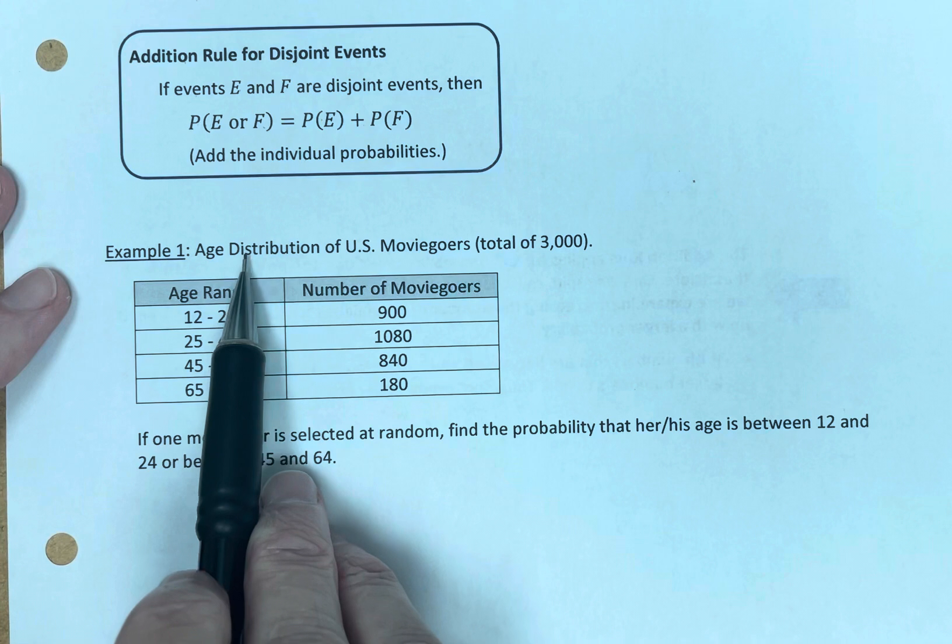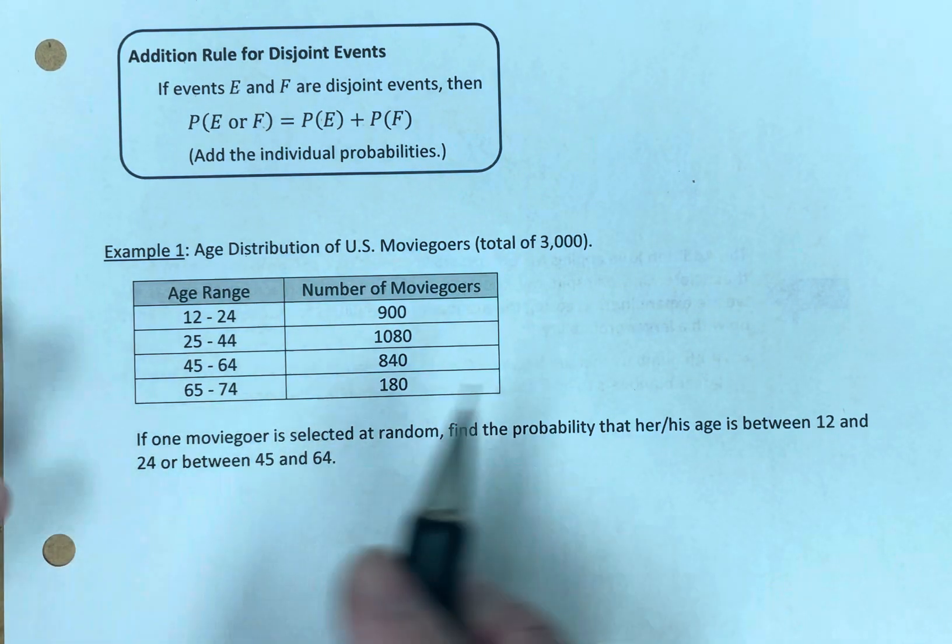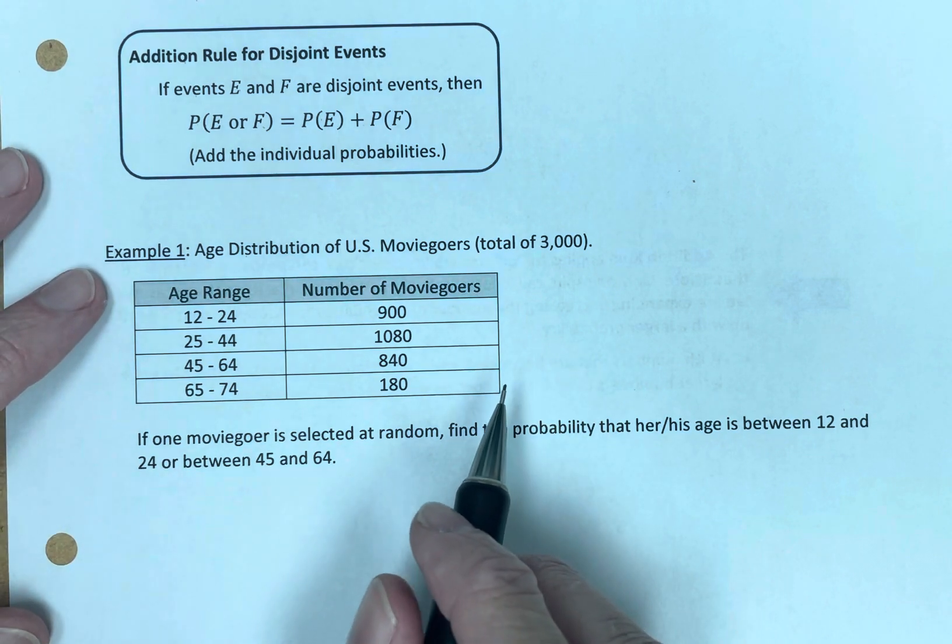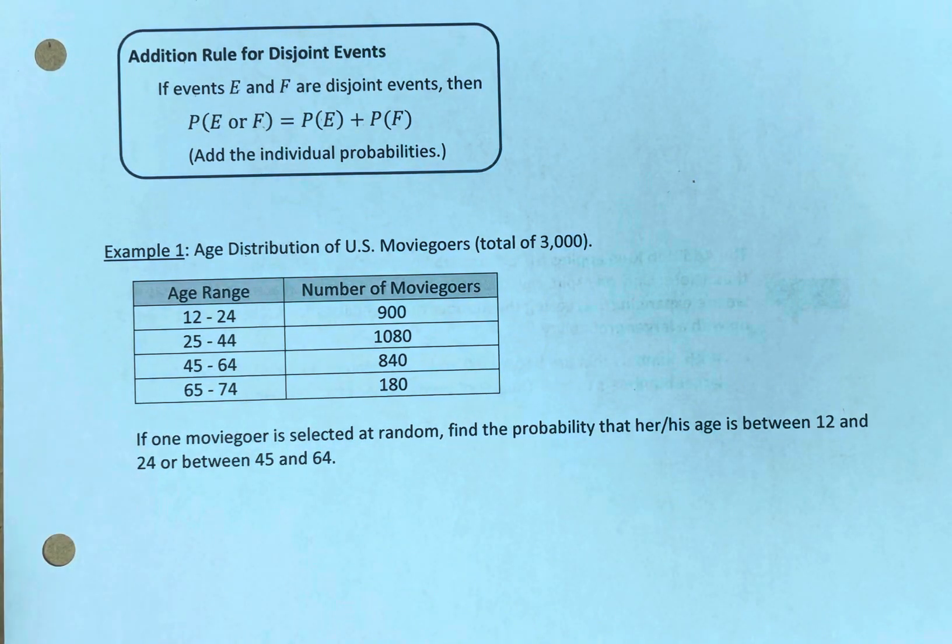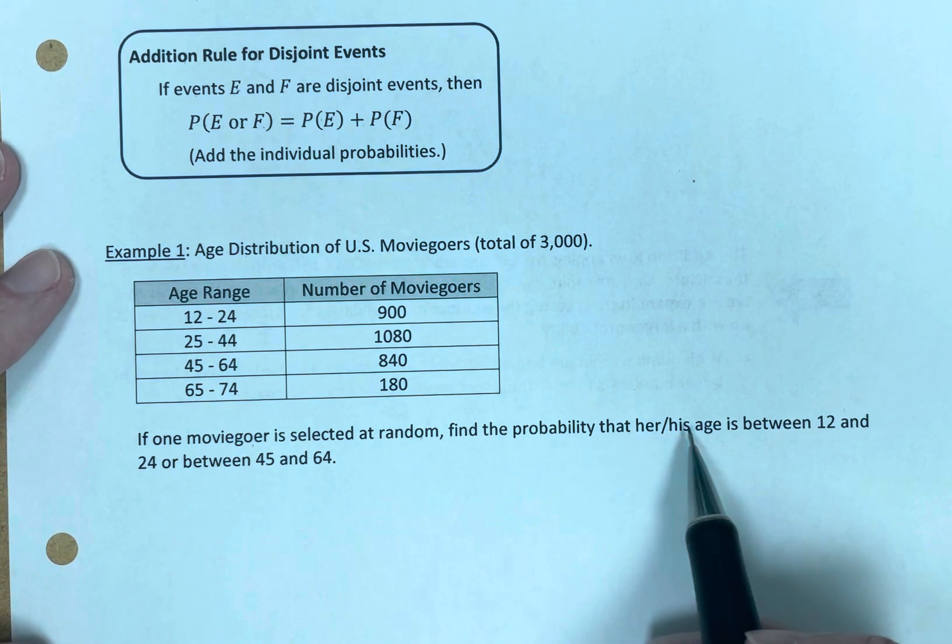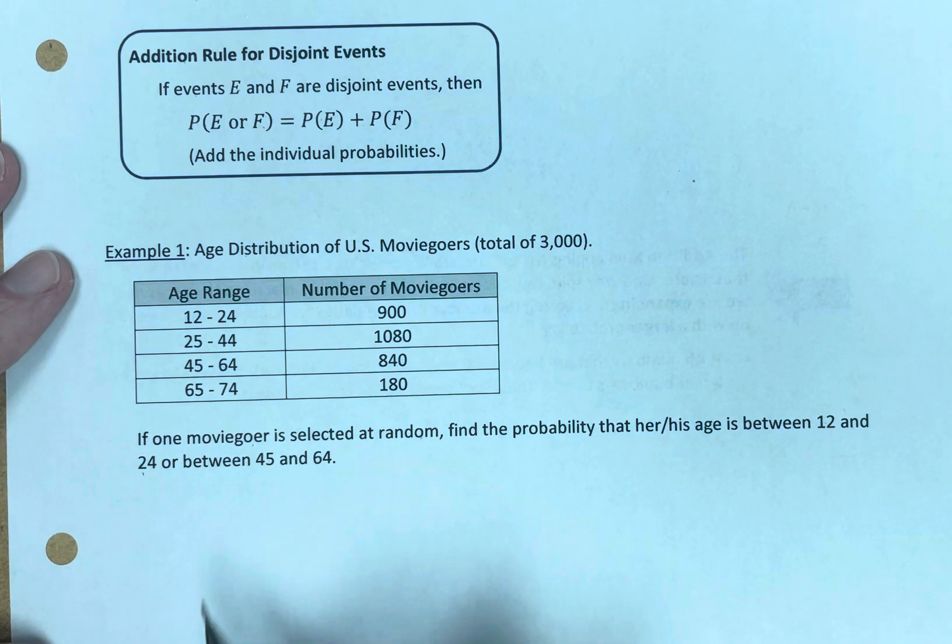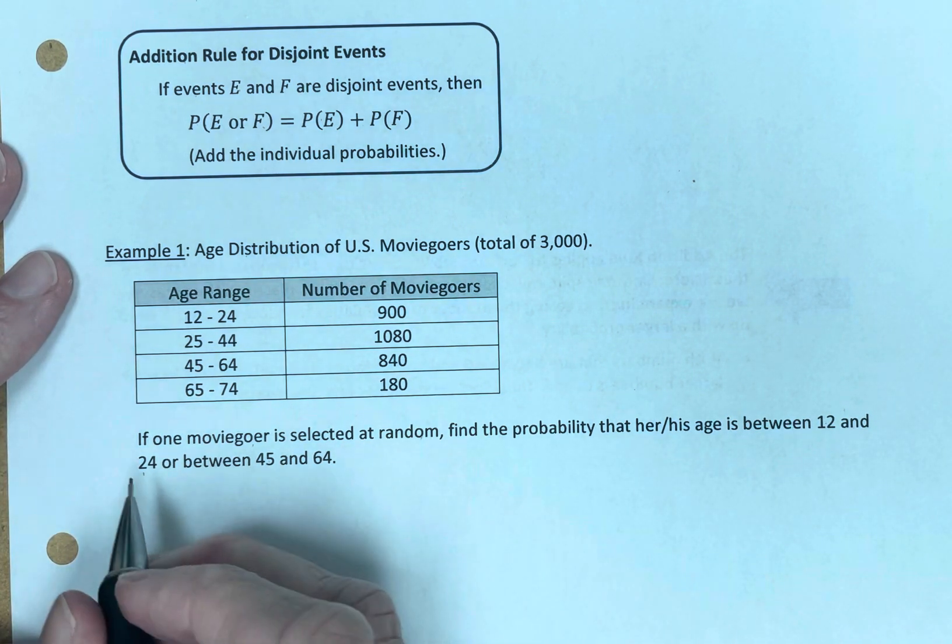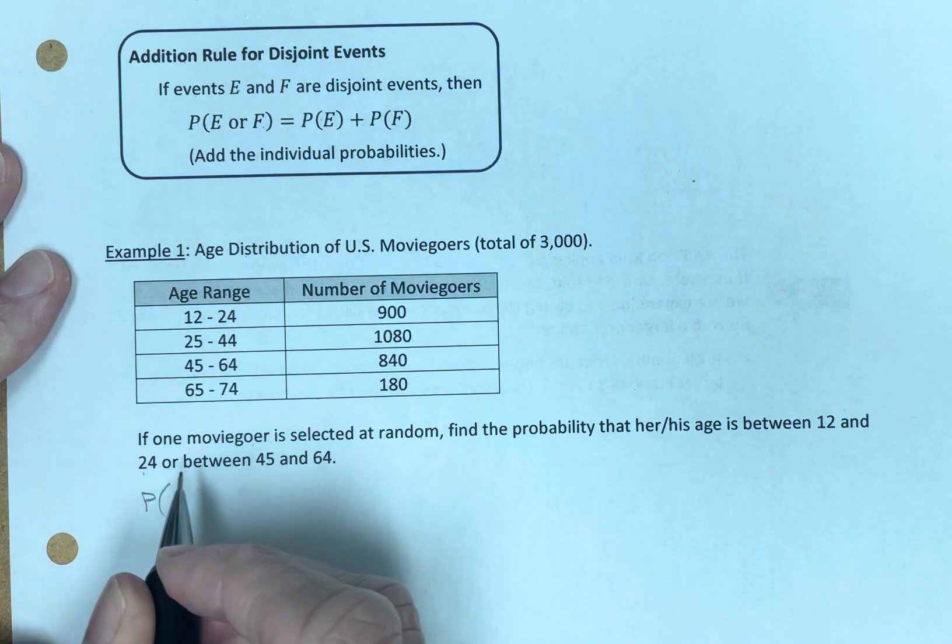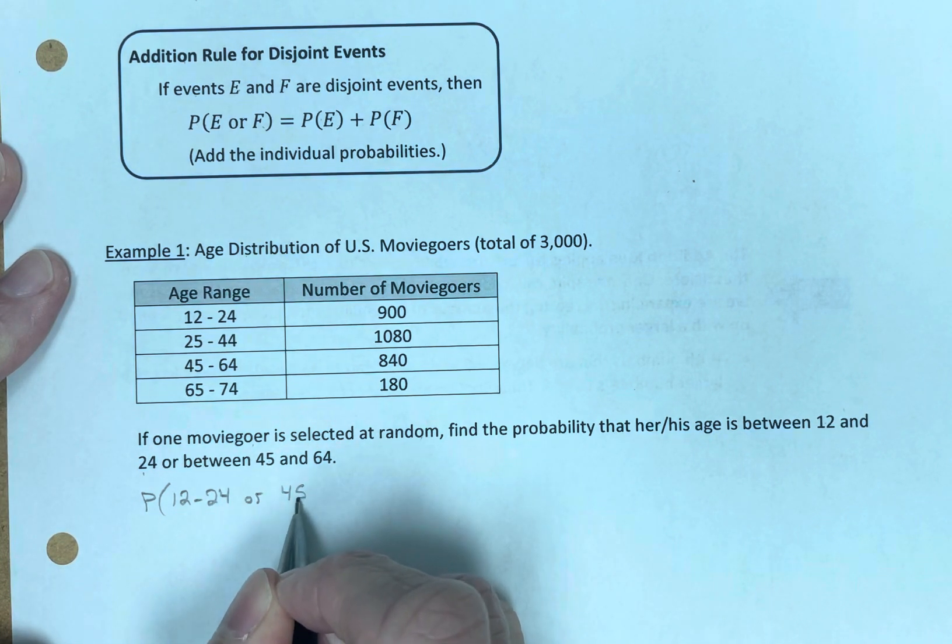Age distribution of U.S. moviegoers. We have 3,000 moviegoers total. If one moviegoer is selected at random, find the probability that his or her age is between 12 and 24 or between 45 and 64.